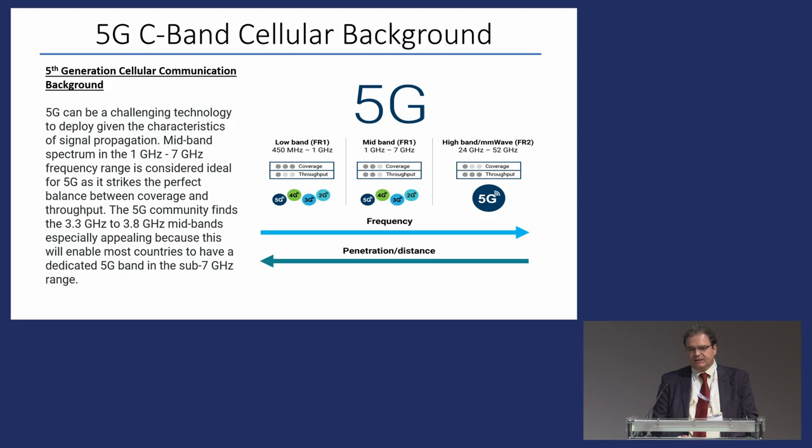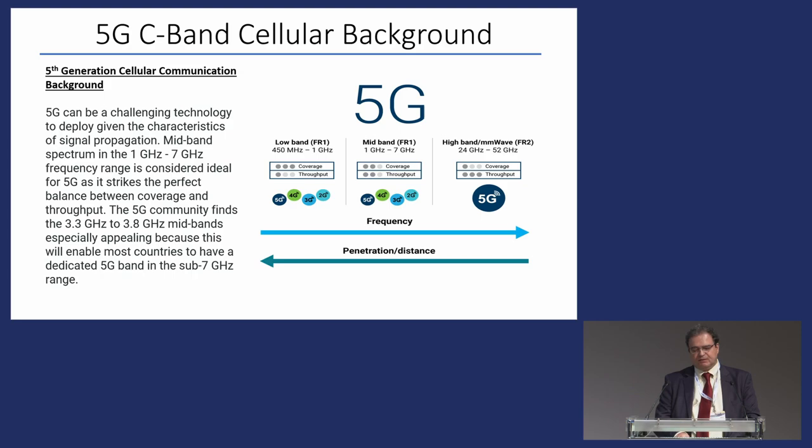The discussions we're focusing on today are for the mid-band, the 1 gigahertz to 7 gigahertz range, but more importantly the 3.5 to 3.89 gigahertz zone where most of the current C-band issues and proximity to the 4.2 to 4.4 gigahertz RAD altimeter frequency range resides.